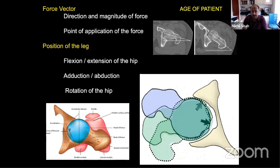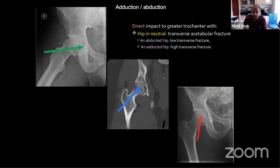Regarding the force vector, we need to know the point of application, direction, and magnitude. The position of the leg — flexion/extension, adduction/abduction, and rotation — influences the fracture pattern. If the hip is abducted, you get a fracture lower in the acetabulum. If neutral, the fracture is at the medial end of the roof. If adducted, you are more likely to damage the posterior superior dome.